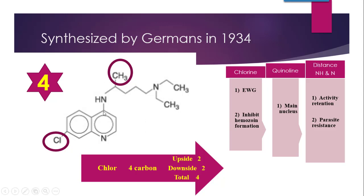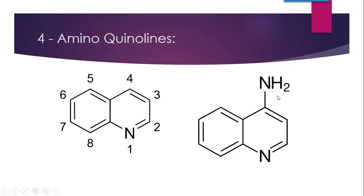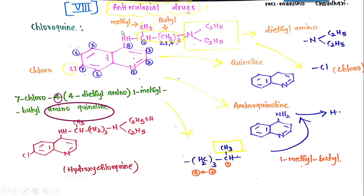This is the structure of chloroquine — you can write it in either chain or structural form. This is the quinoline ring. At the 4-amino position, one hydrogen of NH2 is substituted with a substituent: CH with a CH3 (methyl) group on the first carbon, followed by CH2 three times — making a 4-carbon (butyl) chain — and at the end a diethylamino group (N with two C2H5 groups) attached to the tertiary nitrogen. Chlorine is present at the 7th position.